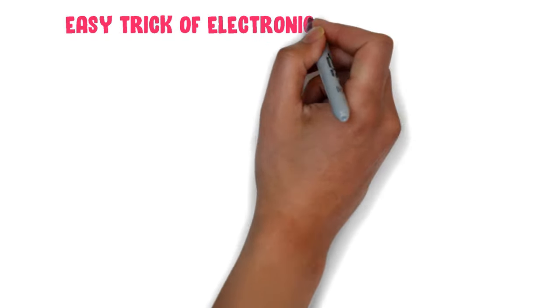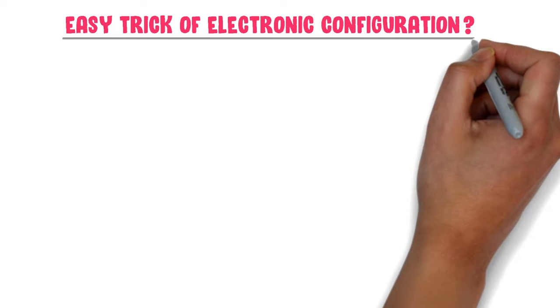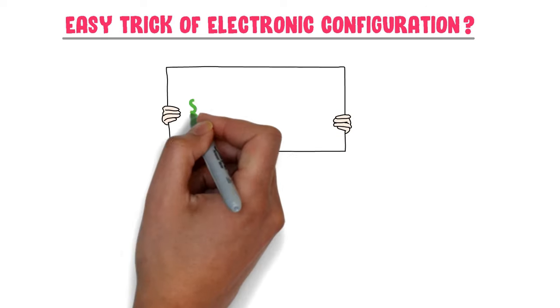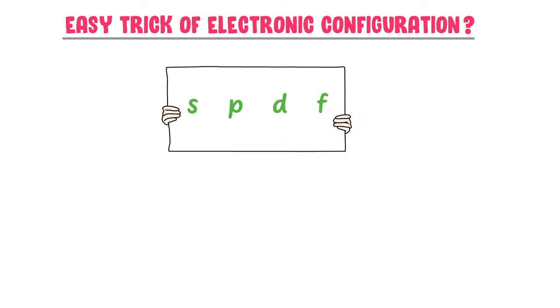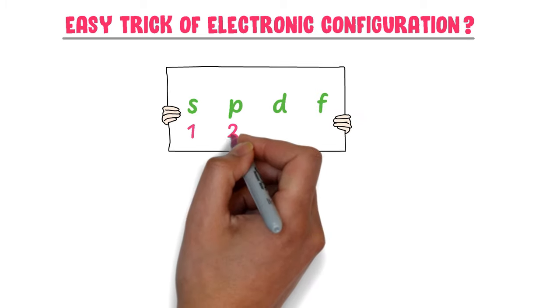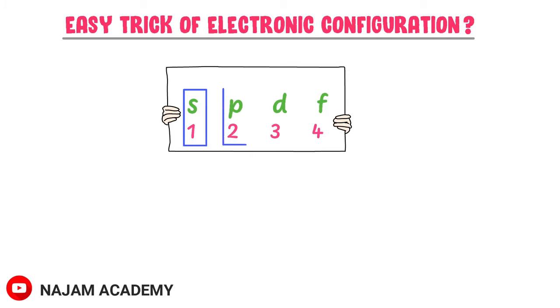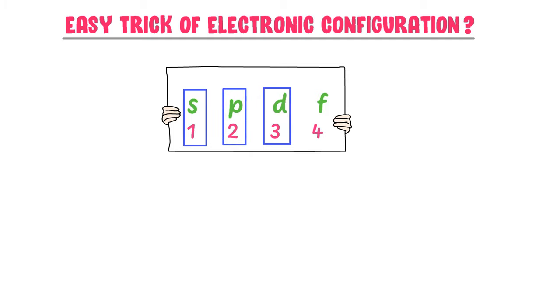Now what is the most easy trick of SPDF Electronic Configuration? Firstly, let me write SPDF and number them 1, 2, 3, 4. We know that S is the first orbital, P is the second orbital, D is the third orbital, and F is the fourth orbital.